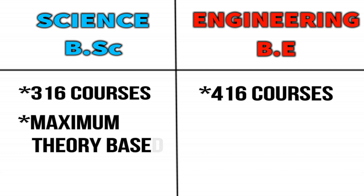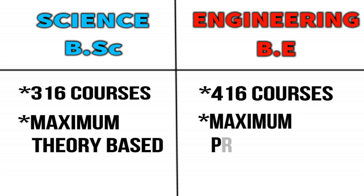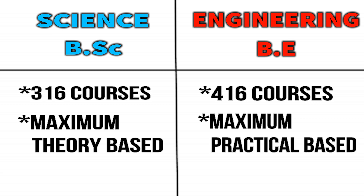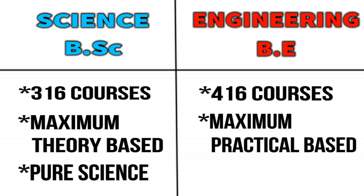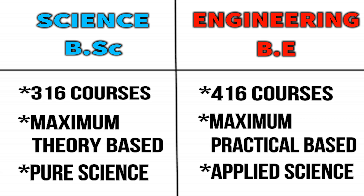Science courses are maximum theory-based, while engineering courses apply science theory to whole technologies — it is practical, designed around real technology. In science courses we talk about pure science and basic science, whereas in engineering courses we use applied science.